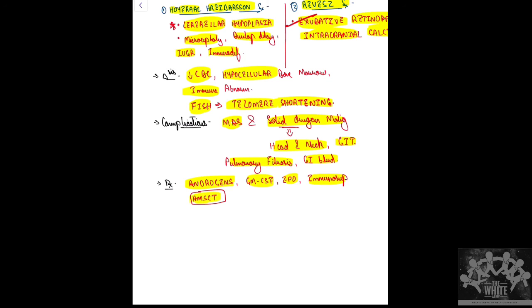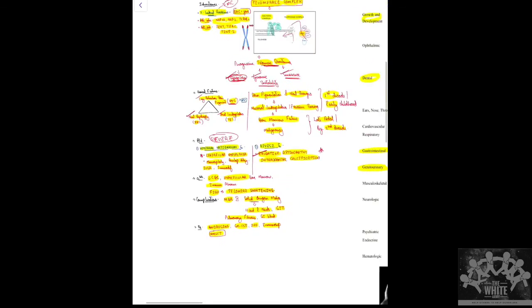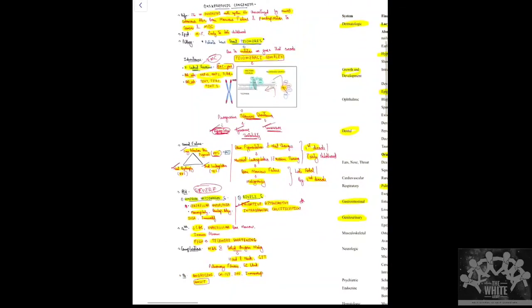The definitive therapy is hematopoietic stem cell transplantation. That was it about Dyskeratosis Congenita — hope this was useful. Thank you, let's end the session.